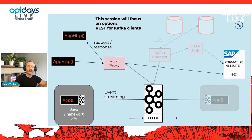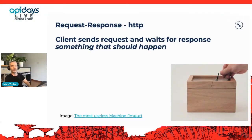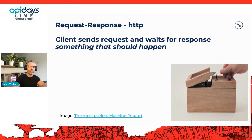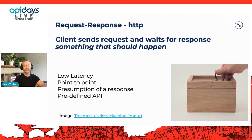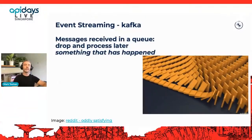Today's talk will focus on four areas: request-response as a communication paradigm for Kafka and how it compares with event streaming; the REST proxy and HTTP calls for interacting with a Kafka system versus doing event streaming; and the actual REST endpoints built into the Kafka brokers themselves. Request-response is an HTTP call where your client sends a request and waits for a response — it's generally fairly low latency, typically point to point, with a predefined API.